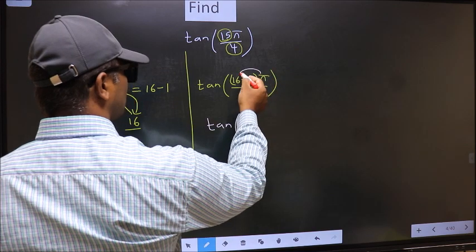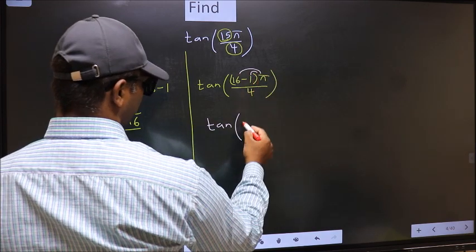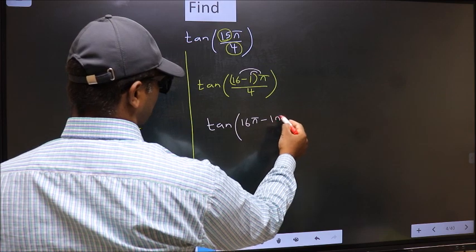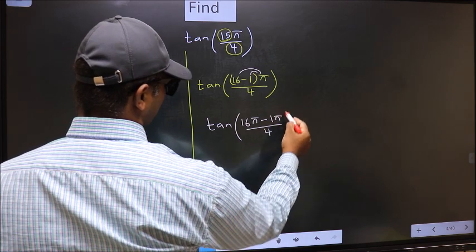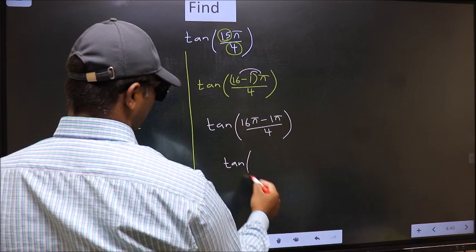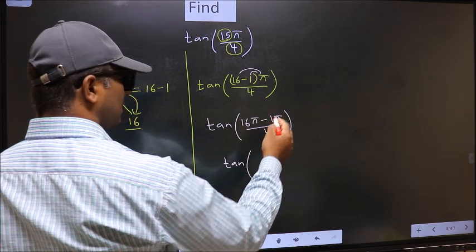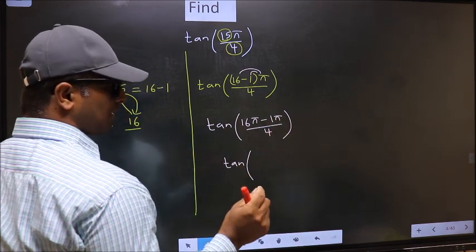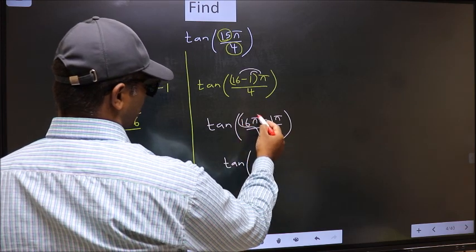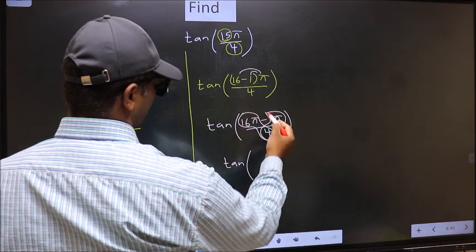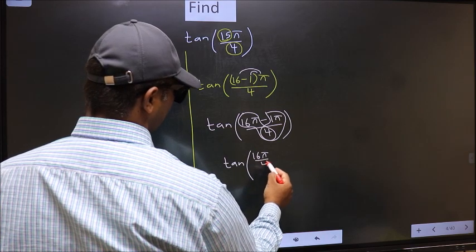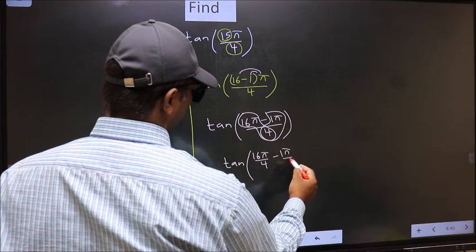Now you should open the brackets. You get 16π minus 1π, all divided by 4. Over here you should split the denominator in this way: that is 16π/4 minus 1π/4.